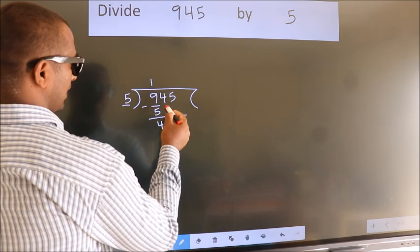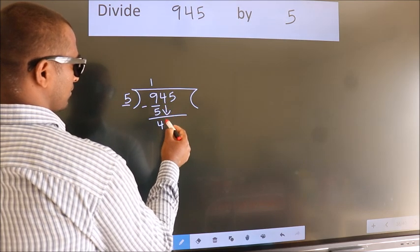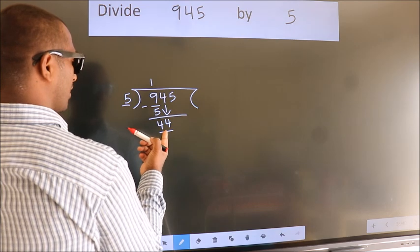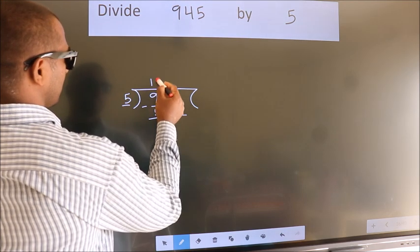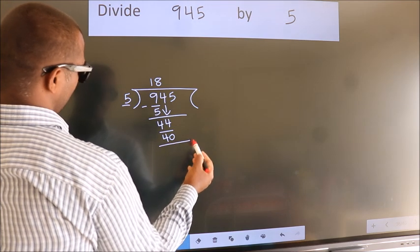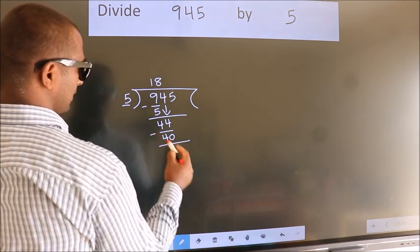After this, bring down the next number. So 4 down, so 44. A number close to 44 in the 5 table is 5 times 8 is 40. Now we subtract. We get 4.